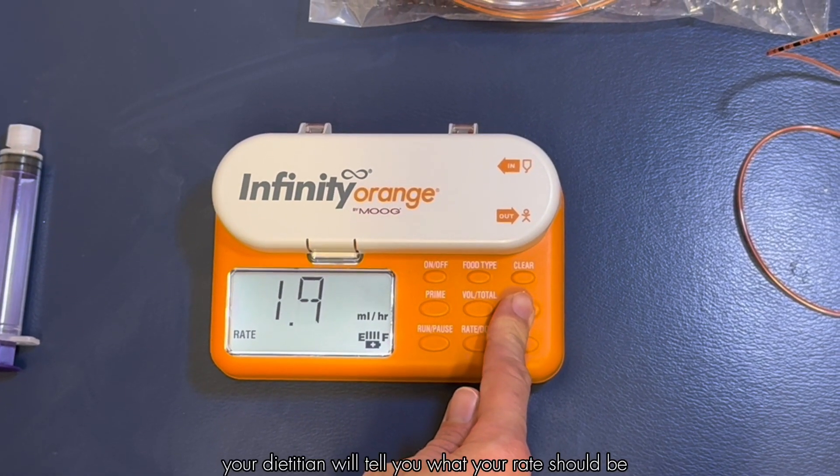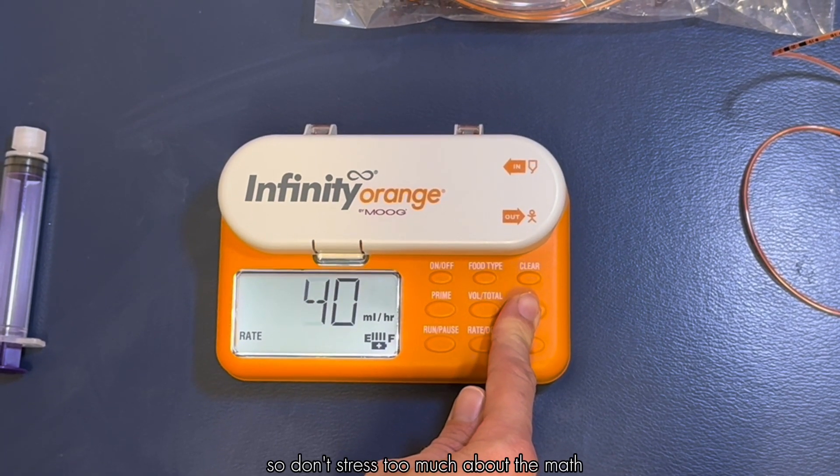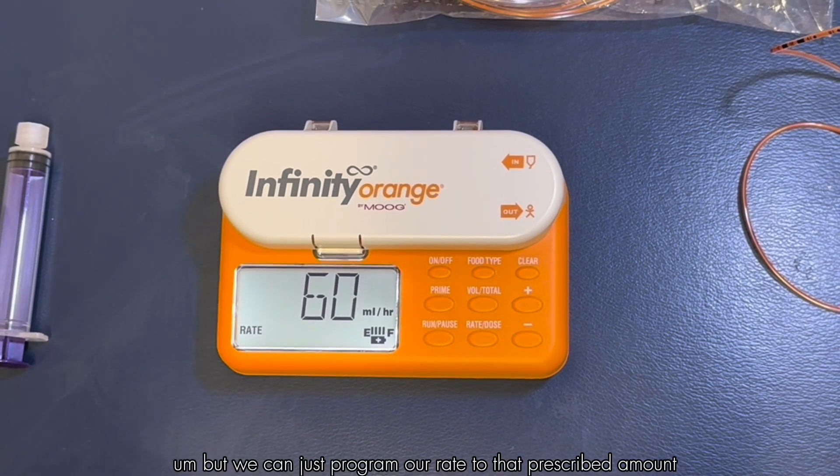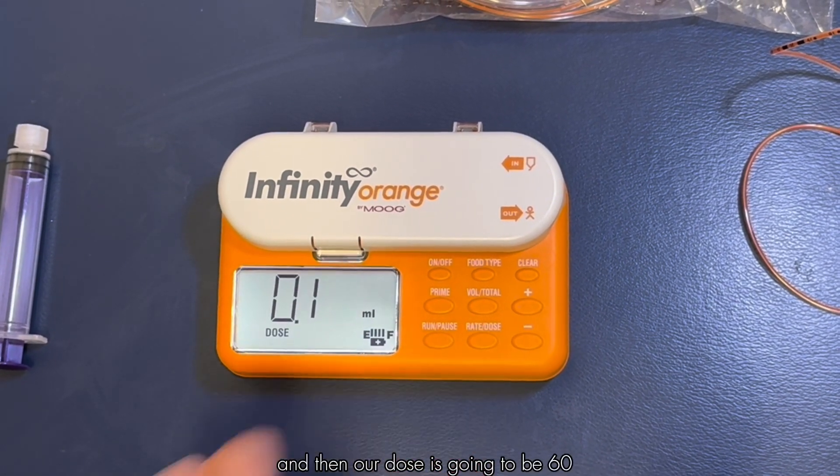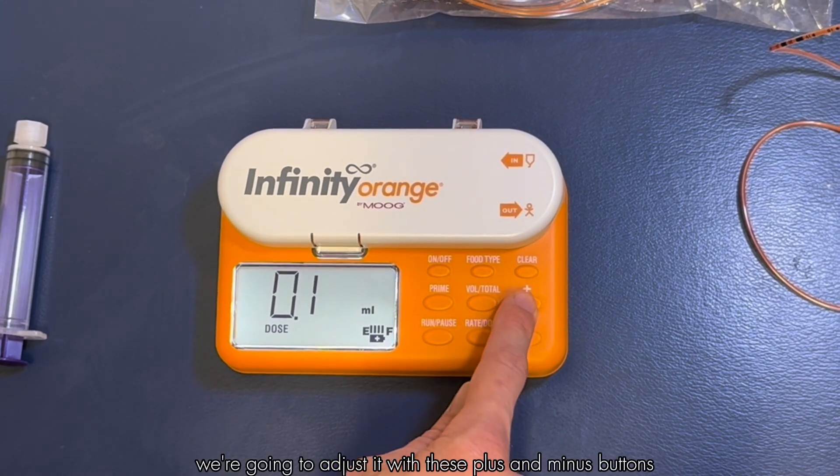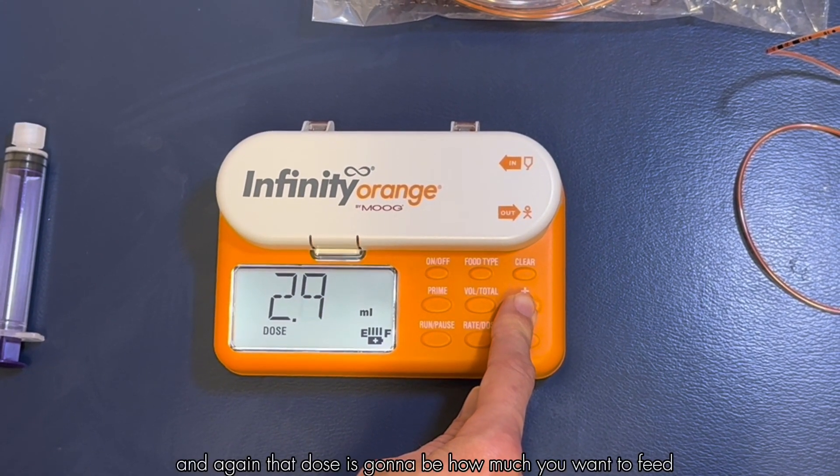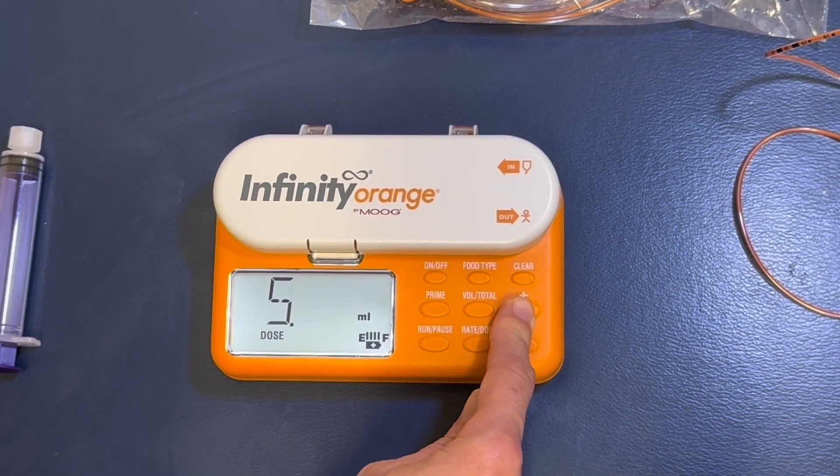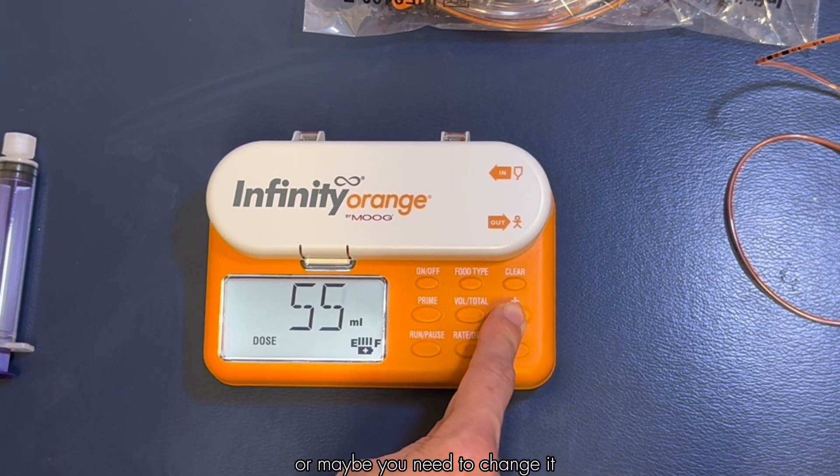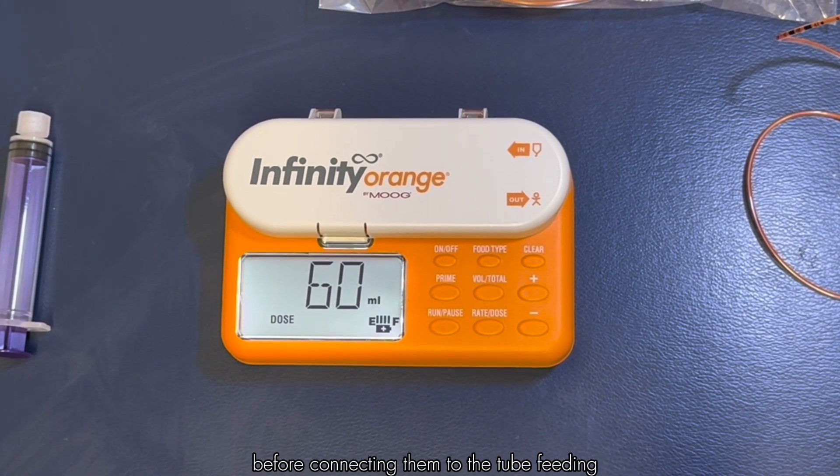Your dietician will tell you what your rate should be so don't stress too much about the math, but we can just program our rate to that prescribed amount and then our dose is going to be 60. We're going to adjust it with these plus and minus buttons. The dose is how much you want to feed and it might be that the dose is the same every time or maybe you need to change it depending on how much your child took by mouth before connecting them to the tube feeding.